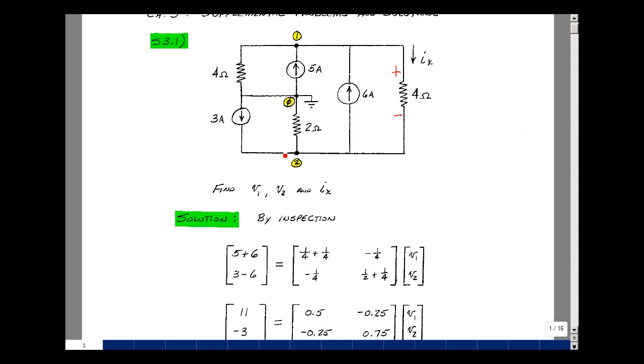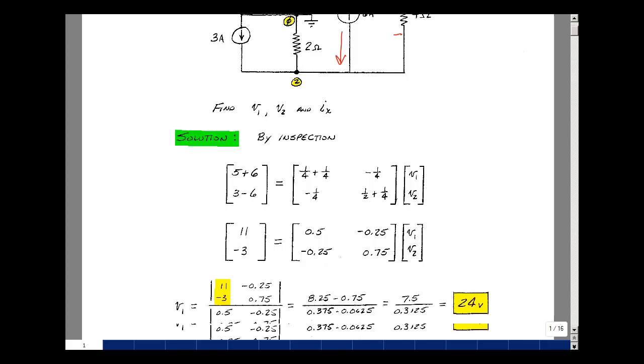The current sources entering are 3 amps and a minus 6 amps, a total of minus 3. Okay, let's combine those terms. 1 quarter plus 1 quarter is 1 half. 1 half plus 1 quarter is 3 quarters. And so we have a minus 1 quarter on each side.